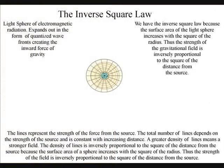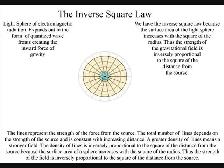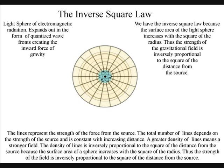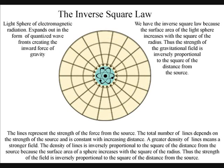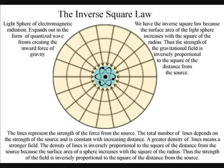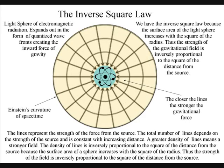We have the inverse square law because the surface area of the light sphere increases with the square of the radius. Thus the strength of the gravitational field is inversely proportional to the square of the distance from the source.